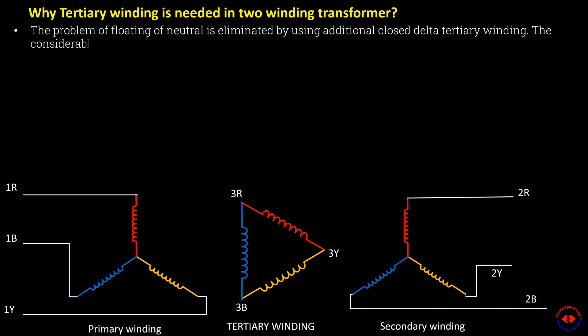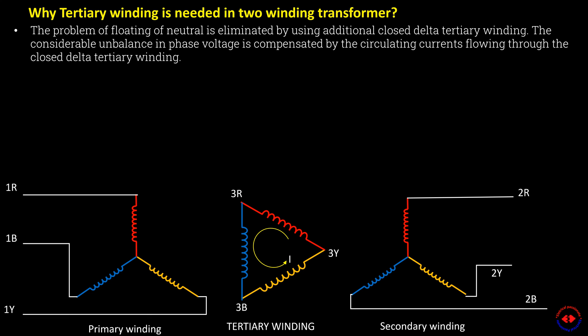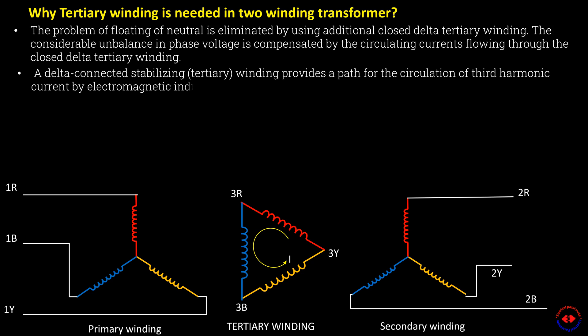The considerable unbalance in phase voltage is compensated by circulating currents flowing through the closed delta tertiary winding. A delta-connected stabilizing tertiary winding provides a path for circulation of third harmonic current by electromagnetic induction.